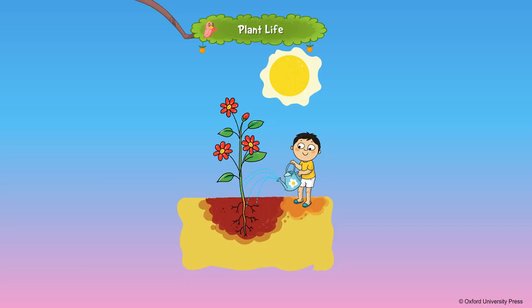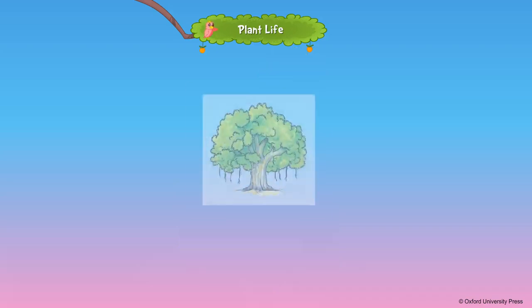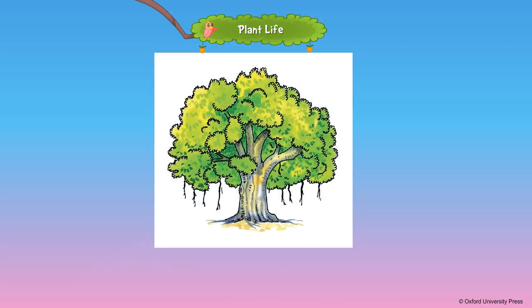Plants need water, sunlight and fertile soil to grow. This is a tree. A big plant with a strong stem is called a tree.